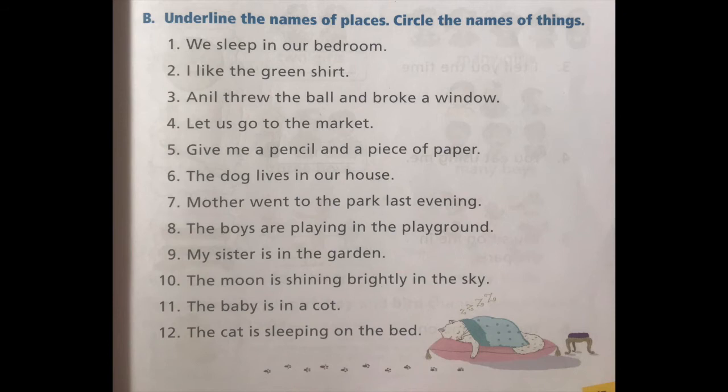Number one: We sleep in our bedroom. Do you see any place here? Yes — bedroom. Bedroom is a place where you sleep, so underline bedroom. Do you see any name of a thing in this sentence? No, so there is nothing to circle. Number two: I like the green shirt. Is there a name of a place? No. But do you see a thing? Yes — shirt. So circle shirt.